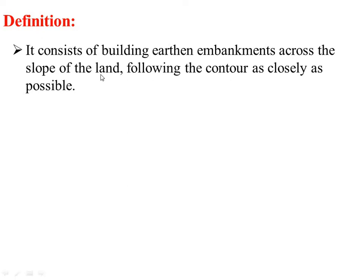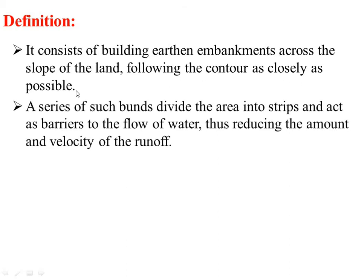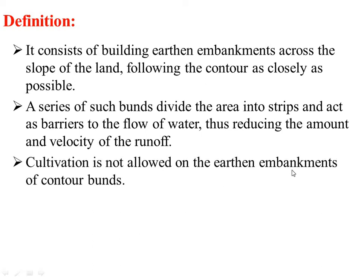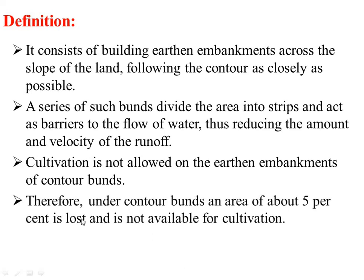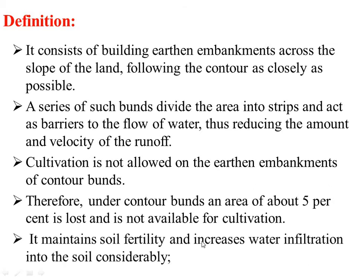Contour bunding consists of building earthen embankments across the slope of land, following the contours as closely as possible. A series of such bunds divides the area into strips and acts as a barrier to the flow of water, reducing the amount and velocity of runoff. Cultivation is not allowed on the earthen embankments, so about 5% of area is lost. It maintains soil fertility and increases water infiltration into the soil considerably.